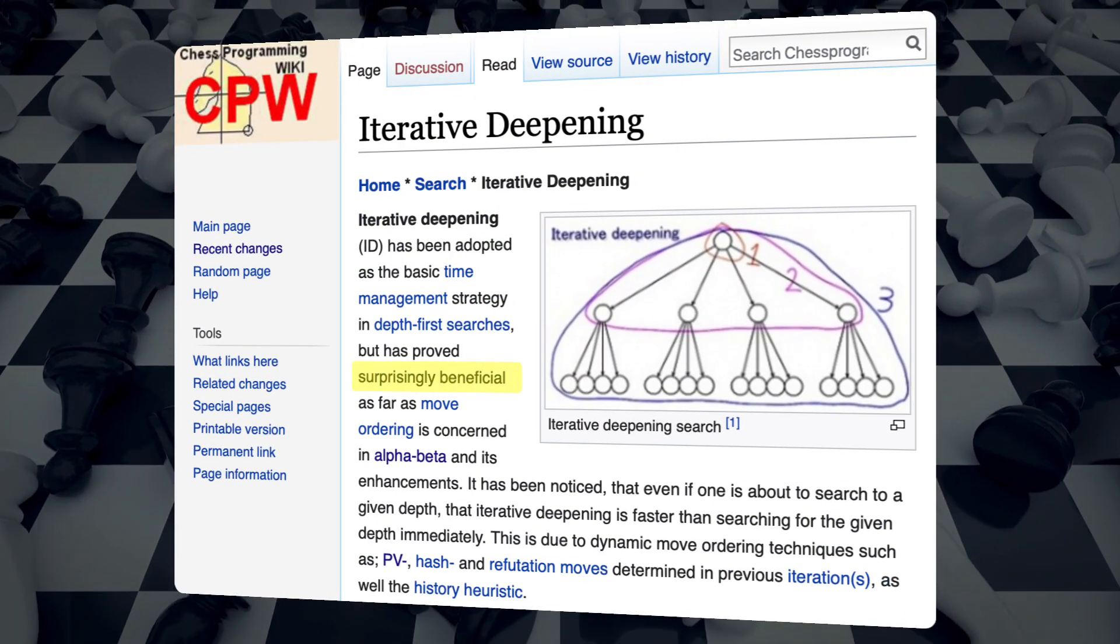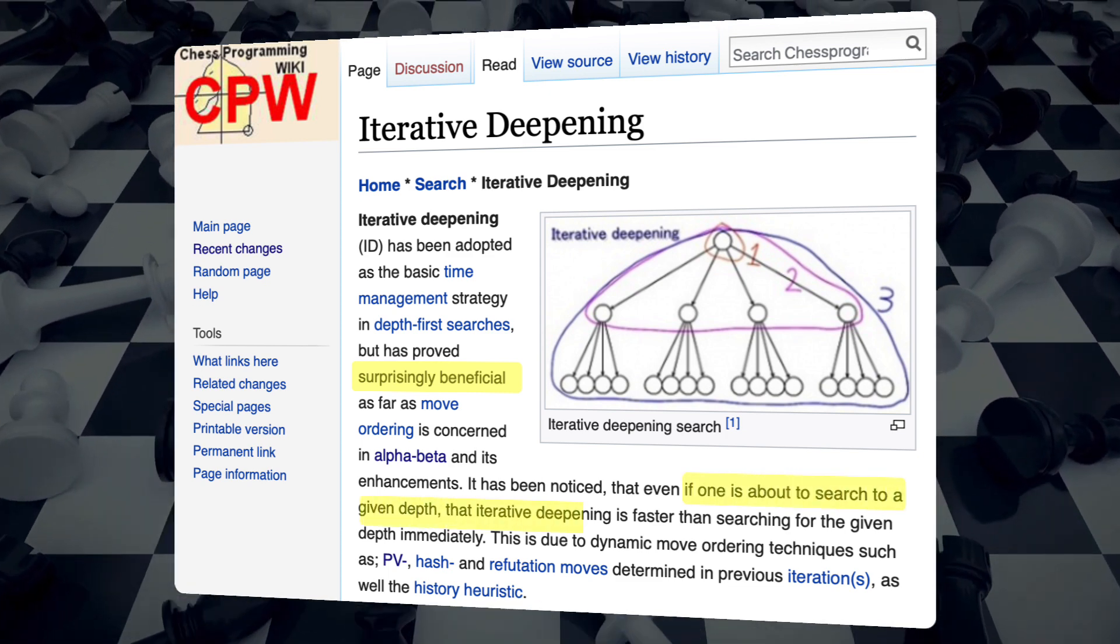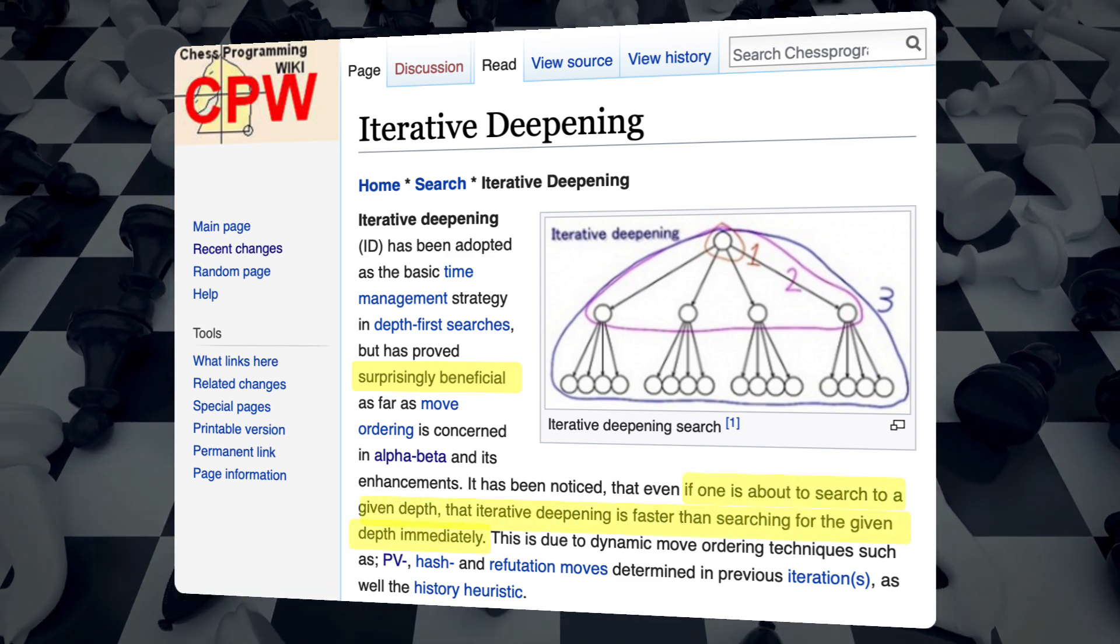The early chess programmers were surprised to find one more benefit. Iterating to depth D could take less time than a straight search to that level.